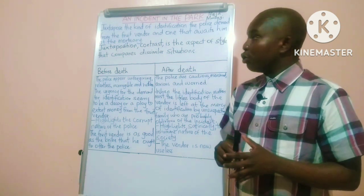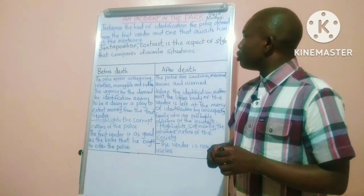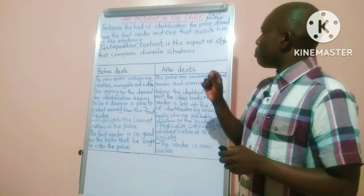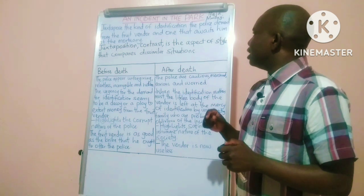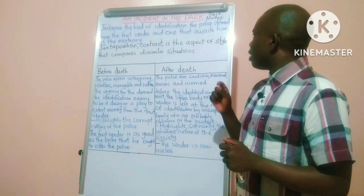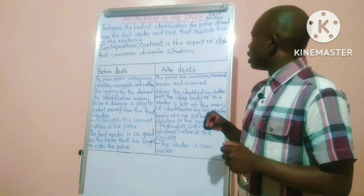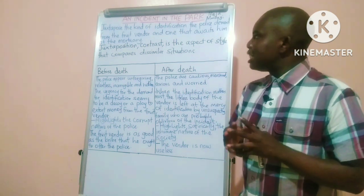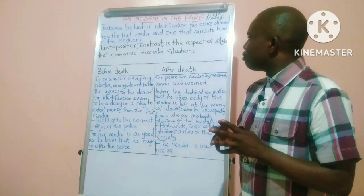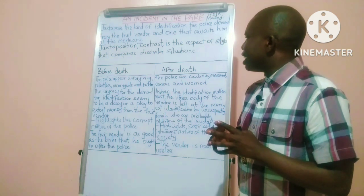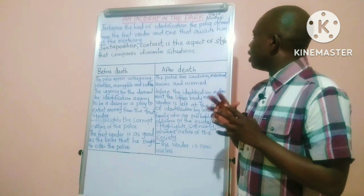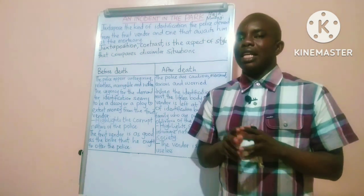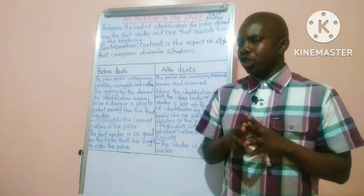So the question was: juxtapose the kind of identification the police demand from the fruit vendor and the one that awaits him at the mortuary.